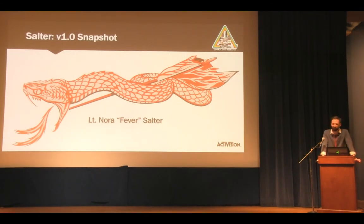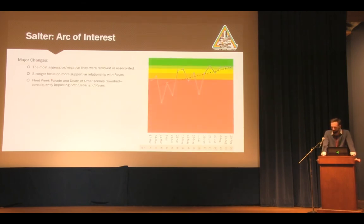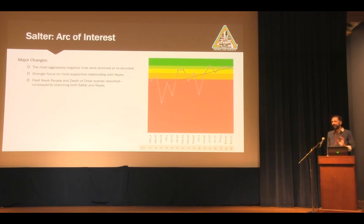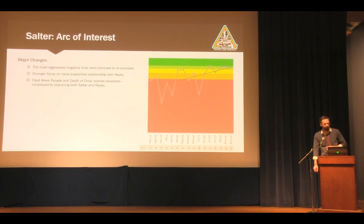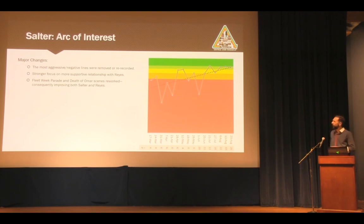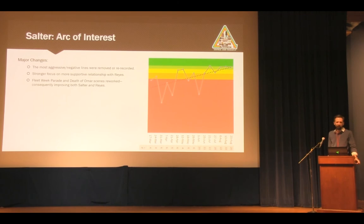After reviewing the early audio of Salter, players felt she was not someone they wanted to hang around with. The team went back and looked at alternative VO — there were many recorded cuts of lines — and picked less aggressive alternatives. The most aggressive and negative lines were removed or re-recorded. There were also some shortened cutscenes to reinforce her supportive relationship with Reyes. The two scenes with the most dramatic change were the Fleet Week parade — her introduction — and the death of Omar.